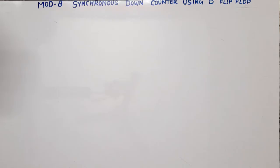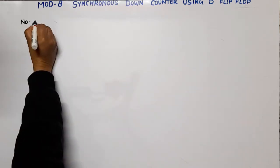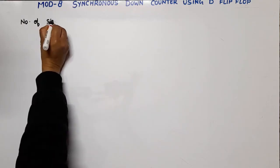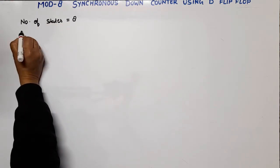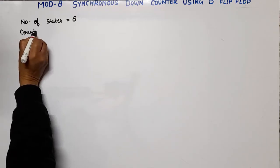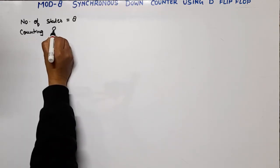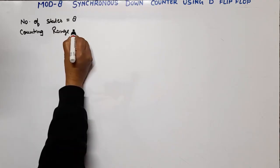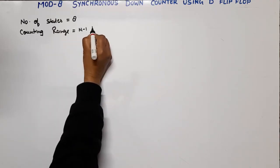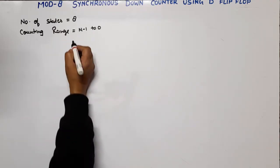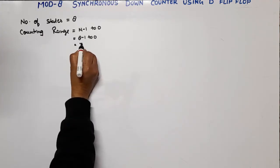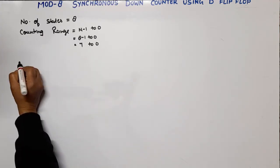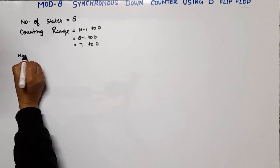Now let's start. First of all, how many states can we count by this counter? Number of states is equal to 8. The counting range is equal to N minus 1 to 0, because this is a down counter, so 8 minus 1 to 0 means 7 to 0.